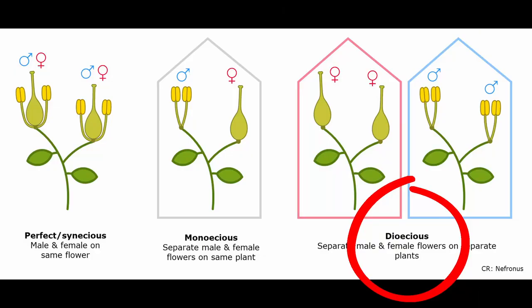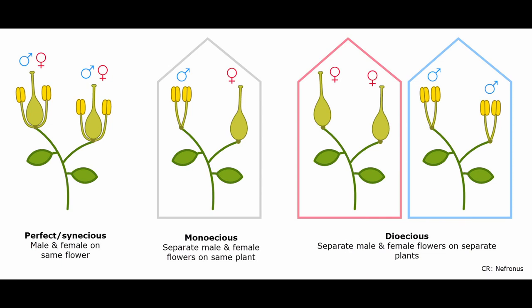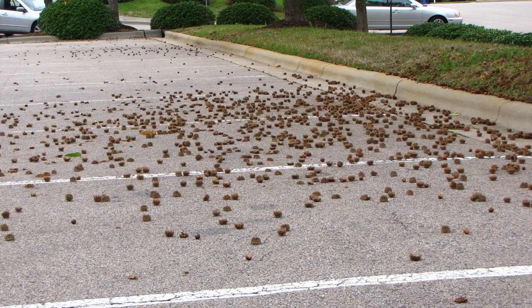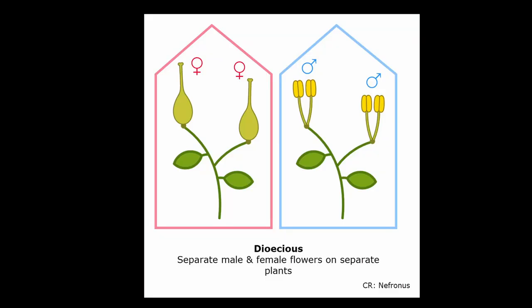Only if you have a dioecious species can you have separate male and female trees. You might be thinking, why do I need to know this? There are actually very practical reasons. Your clients might pick trees for various reasons — oftentimes they want a tree that is less messy. So if they want a tree that doesn't bear fruit because they don't want to clean up after it, you have to pick a male tree. In order to pick a truly male tree, you have to have male-only flowers and you have to have a dioecious species.